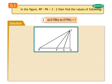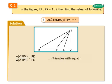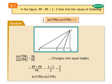Number 2: Find the ratio of area of triangle TRK upon area of triangle TPK. Area of triangle TRK upon area of triangle TPK equals RK upon PK, as they are triangles with equal height. Therefore, RP plus PK upon PK equals 3 plus 2 upon 2, which equals 5 upon 2. Thus, the ratio of areas of triangles TRK and TPK is 5 is to 2.